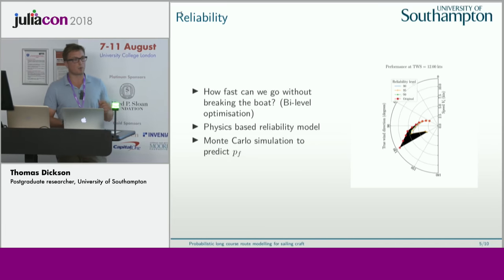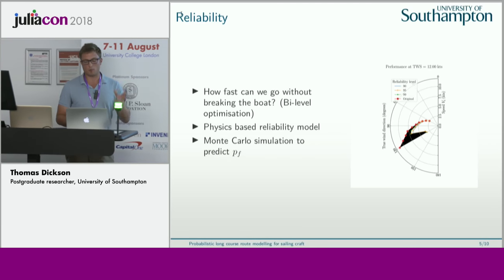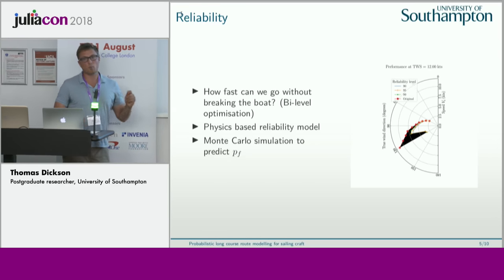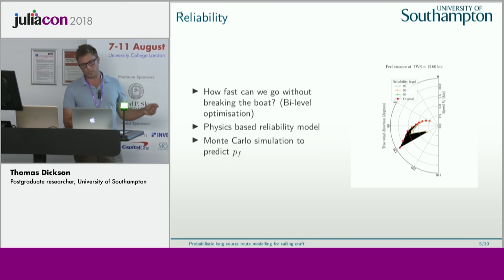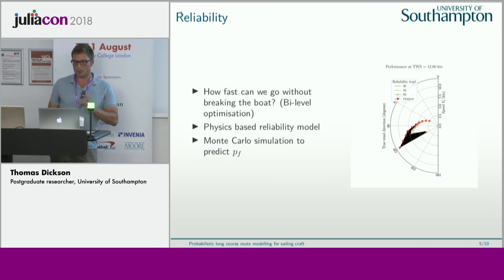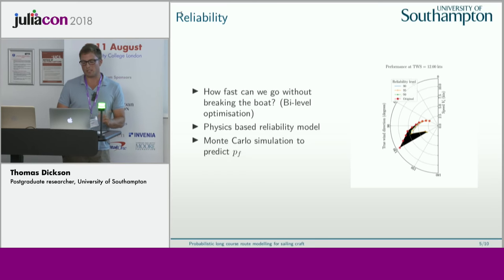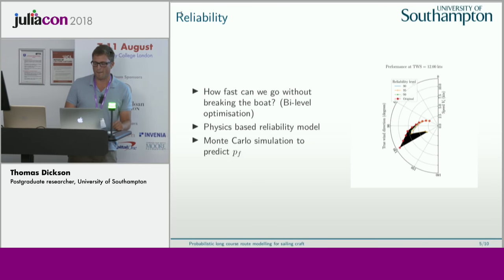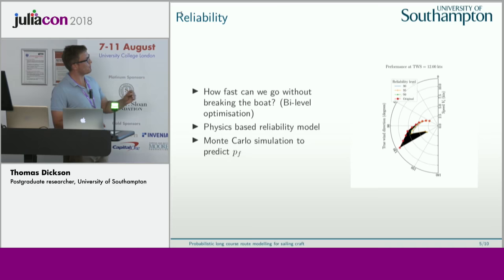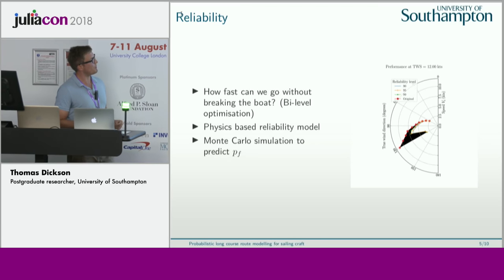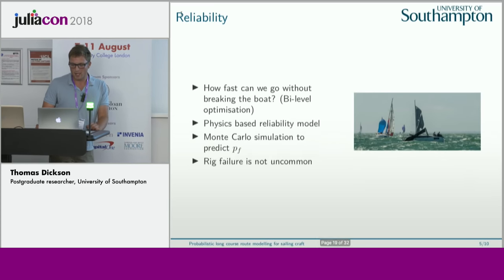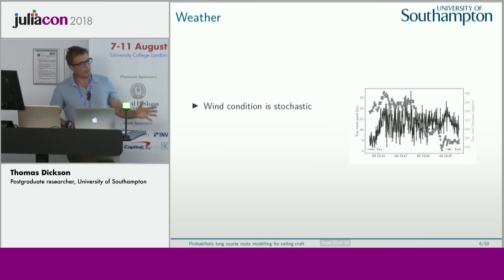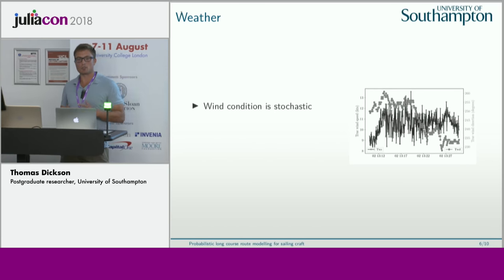I ran Monte Carlo simulations to predict the probability of failure for different wind conditions. This polar plot shows the speed a sailing craft can sail at for a given wind condition — the red dots show the maximum speed. I incrementally increased the speed until the rig failed to predict the probability of failure. The black region is where you don't want to go — going downwind — which was another particularly disappointing moment.